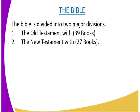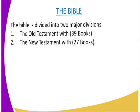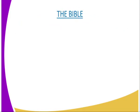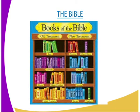The Bible is divided into two major divisions: the Old Testament and the New Testament. The Old Testament has 39 books and the New Testament has 27 books. Here we have a picture of the Bible showing the books. We can see the Old Testament and the New Testament, each with a category of books.